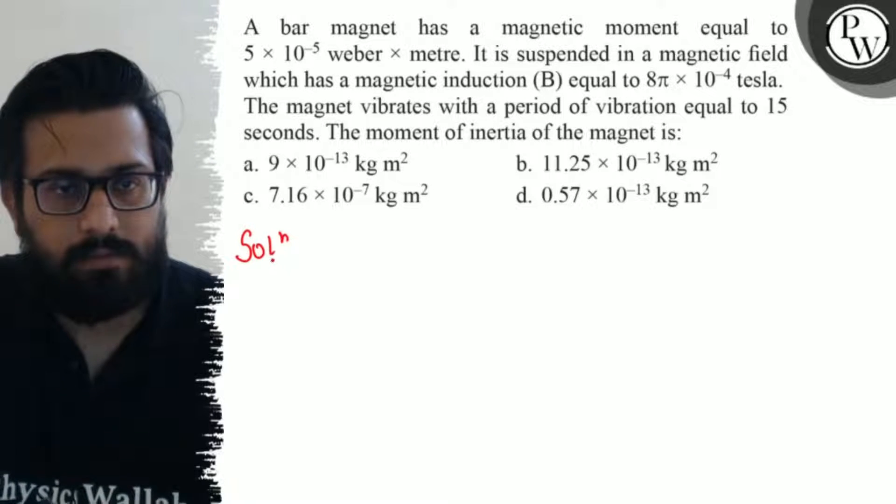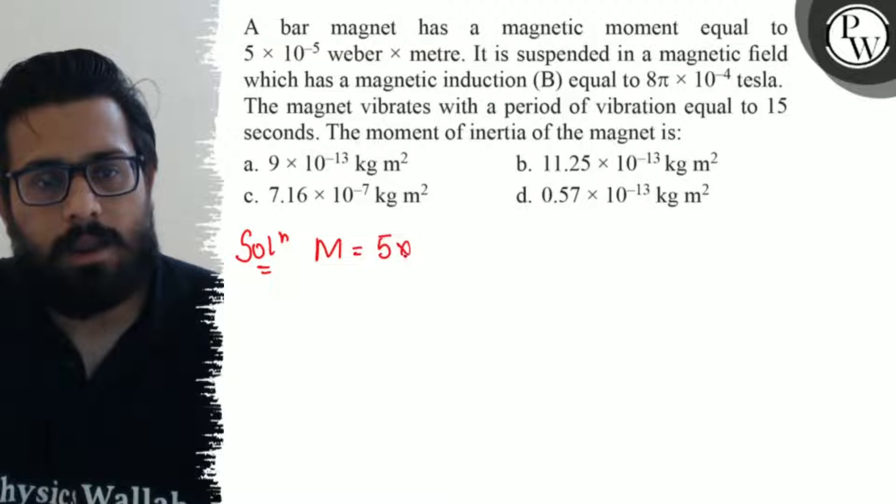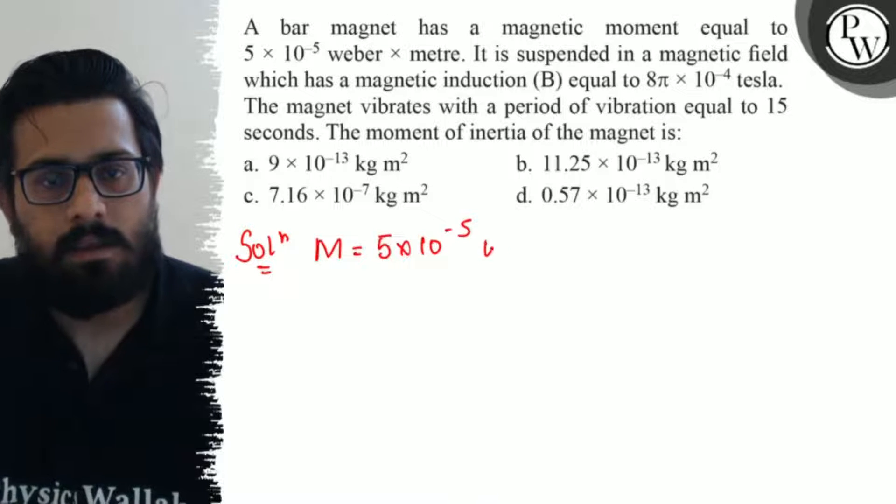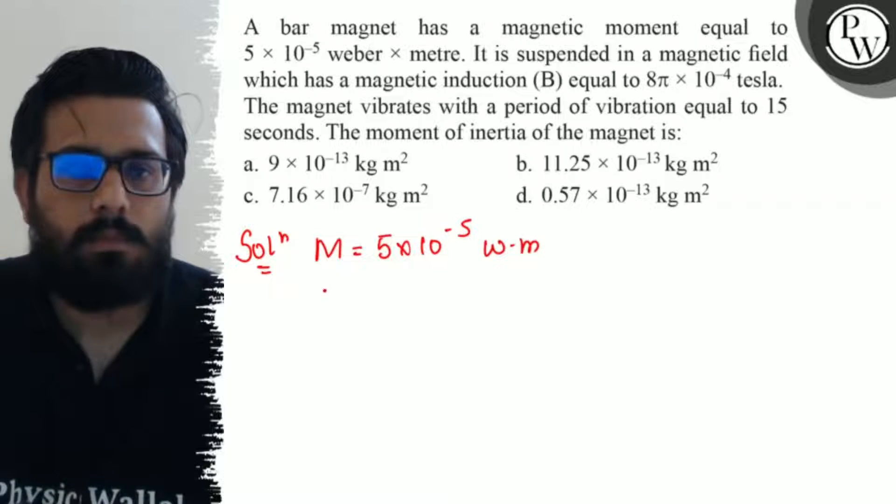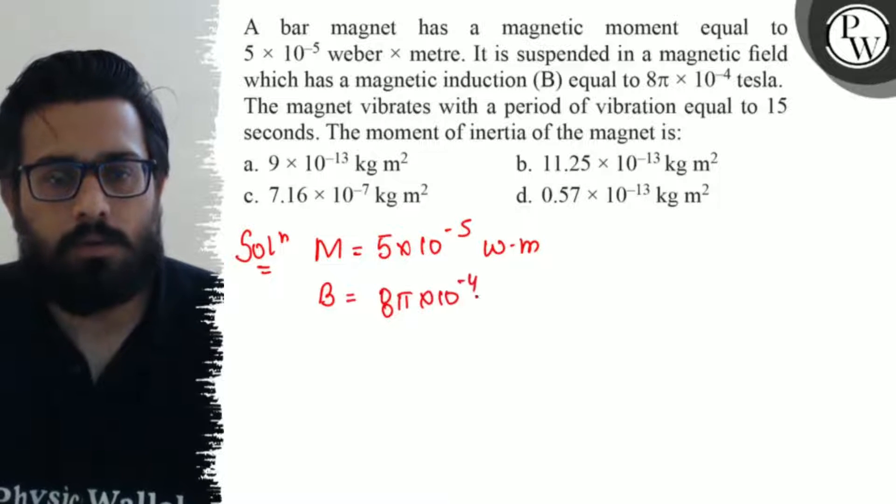So here in this question, what are the given data we have? We have the value of magnetic moment as 5 × 10^-5 weber-meter. Then you have the value of magnetic field as 8π × 10^-4 Tesla.